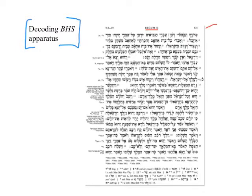What the BHS does is it presents the text as it is found in the Leningrad Codex, and the Leningrad Codex is the earliest of the complete Hebrew Bibles in the Masoretic tradition. What we find in the BHS, then, is notations in the margins. On the side margins, we call this the Masora Parva.